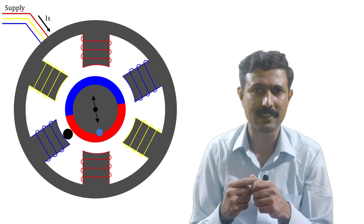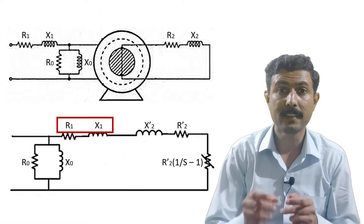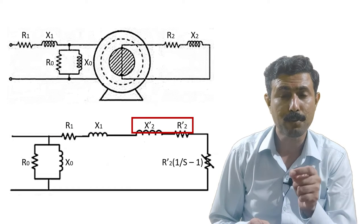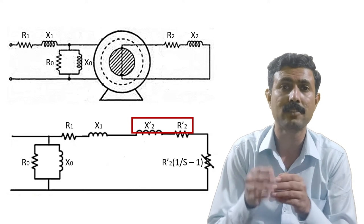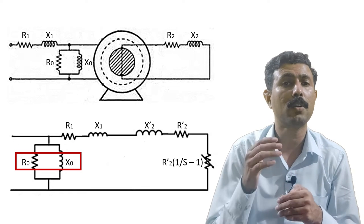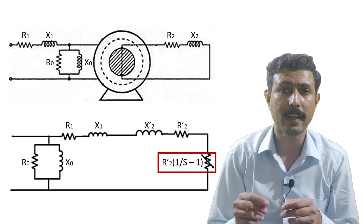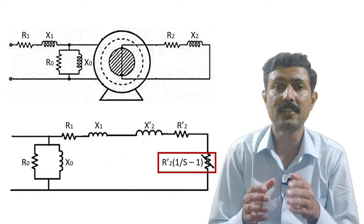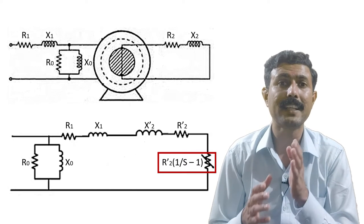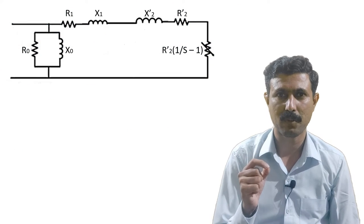To better understand this, let's look at the equivalent circuit of the induction motor. Here, r1 and x1 are the resistance and inductance of the stator winding, while r2 dash and x2 dash are the resistance and inductance of the rotor winding. The i0 and x0 components refer to the core loss of the machine, and the last component r2 dash × (1/s − 1) is the electrical equivalent of the mechanical power delivered by the rotor.